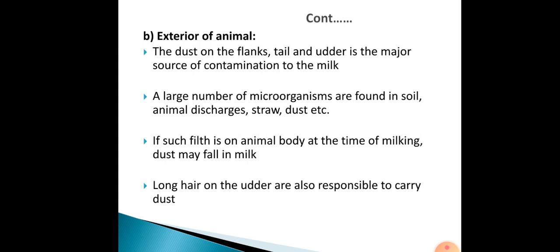The exterior of the animal is another contamination source. Dust on the flanks, tail, and udder is a major source of contamination. A large number of microorganisms are found in soil, animal discharges, straw, and dust. If such filth is on the animal body at the time of milking, dust may fall into the milk. Long hair on the udder is also responsible for carrying dust.